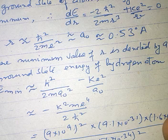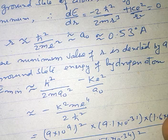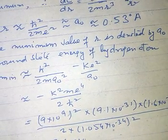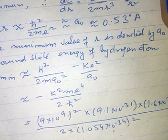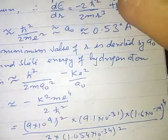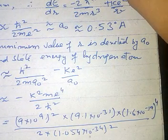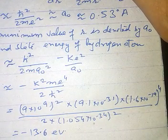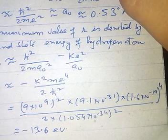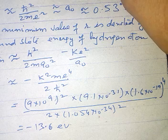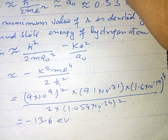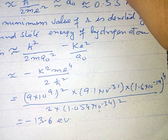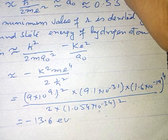This is approximately equal to minus k square m e to the power 4 upon 2 h-cross square. Putting k equal to 9 into 10 raised to the power 9, m equal to 9.1 into 10 raised to the power minus 31, e equal to 1.6 into 10 raised to the power minus 19 to the power 4, and h-cross equal to 1.054 into 10 raised to the power minus 34, and solving this equation, we get minus 13.6 electron volt, which is the ground state energy of the hydrogen atom. Next time we will be discussing more applications. Thank you.